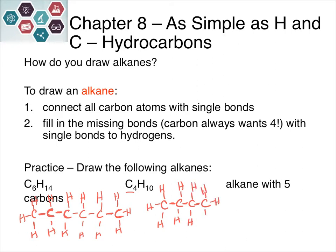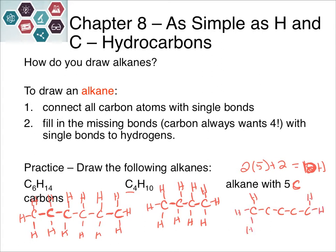The one on the right end also needs three, giving 10 hydrogens total. Pause the video and try drawing an alkane with five carbons. Using the formula: 2 times 5 plus 2 gives 12 hydrogens. For five carbons, the ones on each end need three hydrogens each, and all the ones in the middle need two each, which adds up to the 12 required. Drawing alkanes is simple: connect carbon atoms with single bonds, then fill in with hydrogens so all carbons have four bonds.